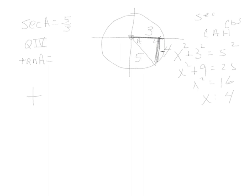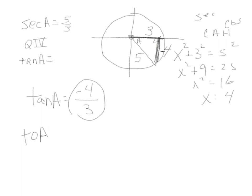Our problem asks us to find tangent of A. Tangent is opposite over adjacent. Looking at the triangle, the opposite side is negative 4 and the adjacent side is 3. That cannot be reduced, so negative 4/3 is our answer. Let me know if you have questions today.